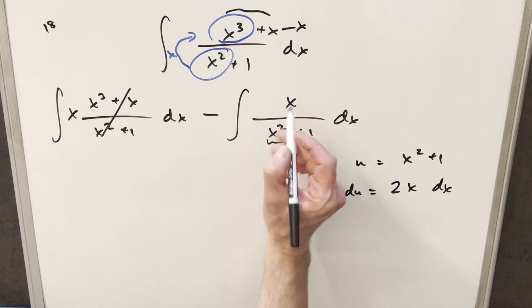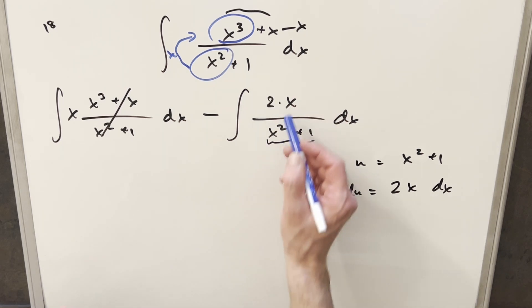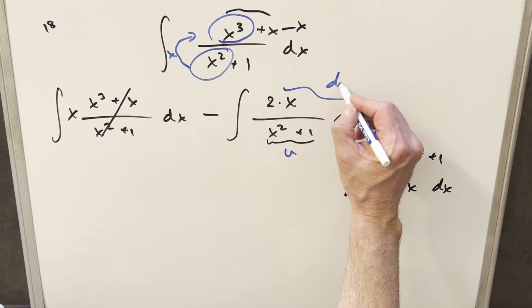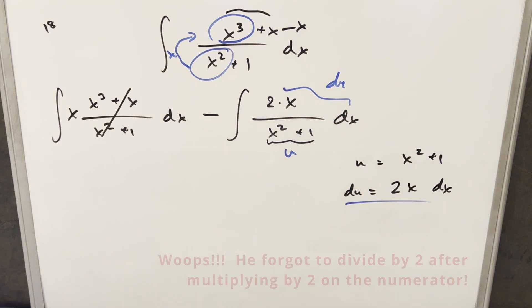Now we already have the x here. If I just multiply by a 2, now we have the case that everything up here is just this du right here. So now we're also about to finish it.